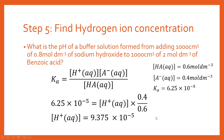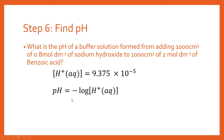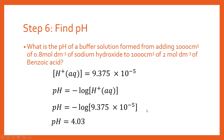We're almost at the stage where we can calculate the pH. The pH equation is: pH = −log₁₀[H⁺]. We substitute the hydrogen ion concentration we just found into this equation, evaluate it, and we get a pH of 4.03. We've now calculated the pH of this buffer solution.